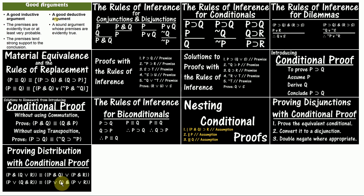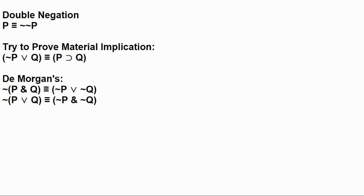In the last video, we did proofs for the rule of distribution. And in that video, I mentioned that there were three rules of replacement left to look at. These are double negation, material implication, and De Morgan's. And the question I wanted you to figure out was which one of these can still be proven using the methods we already have learned about — which are the rules of inference, the rules of replacement, and conditional proof. One of these can be proven with just those, and the other two are going to need the method of indirect proof to prove them.